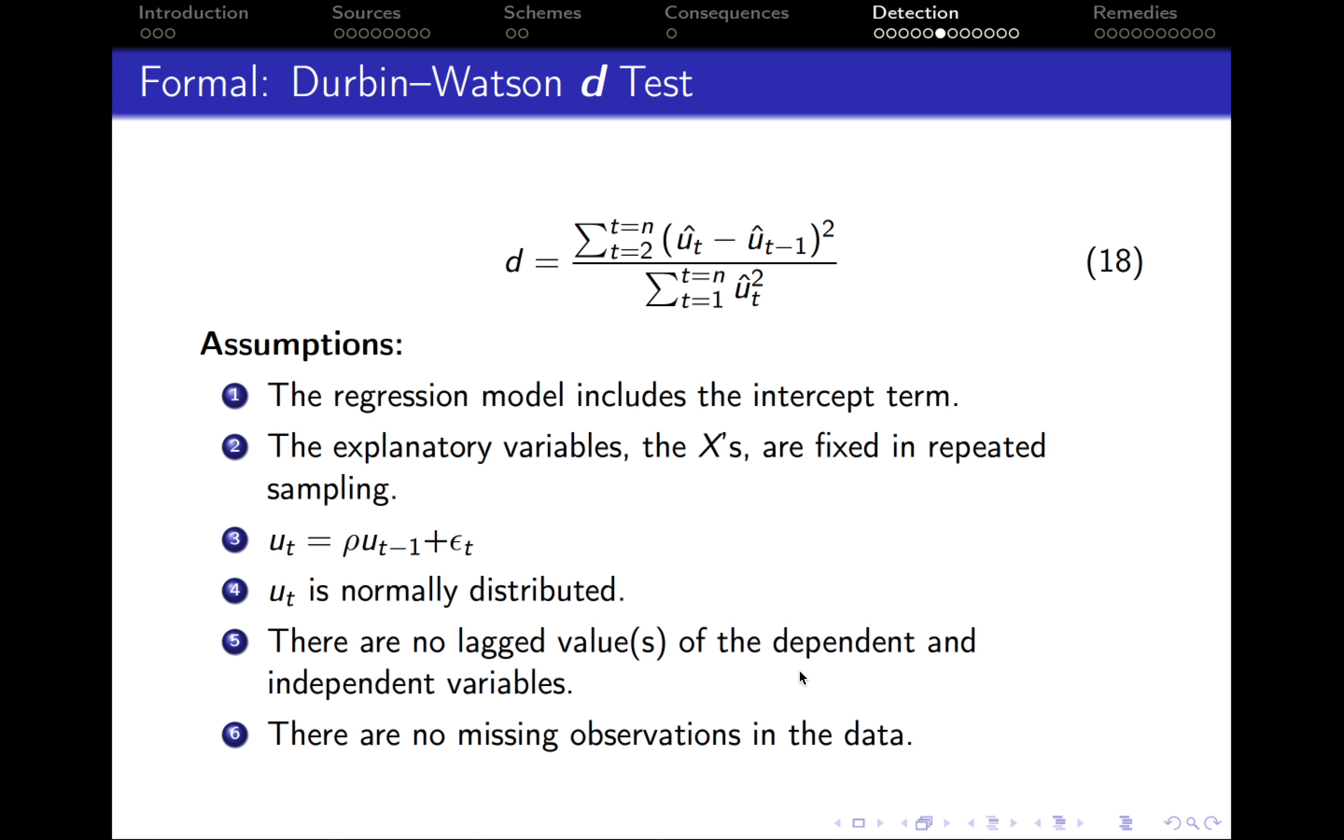Another formal test that allows us to detect autocorrelation is the very famous Durbin-Watson D test. On this slide you can see the formula that is used for calculating the D statistic. You don't need to remember it. However, what you need to keep in mind is the assumptions underlying the Durbin-Watson D test.